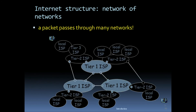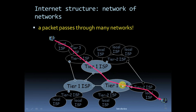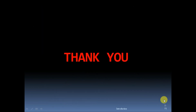A packet passes through many networks. Starting from a host, the packet is passed to the local ISP, then tier three, then tier two, then tier one, and again from tier one back down to tier two and the local ISP at the receiver's end.